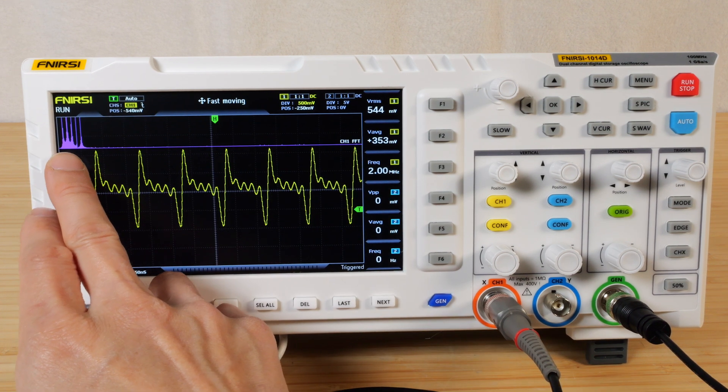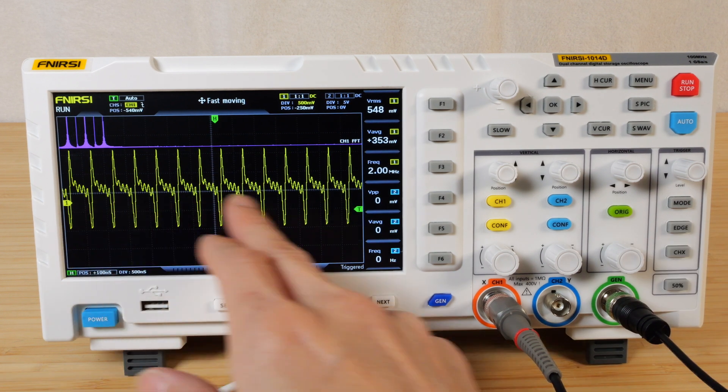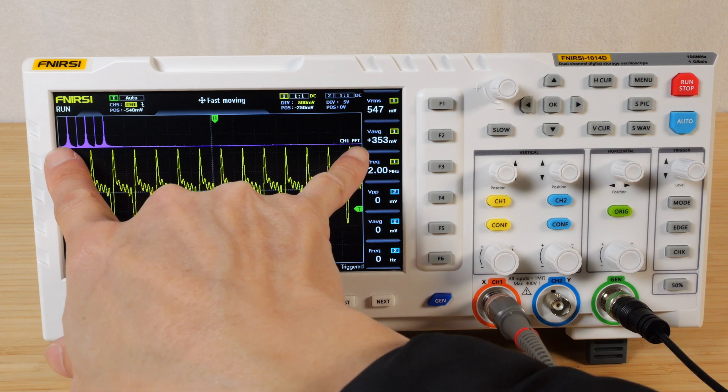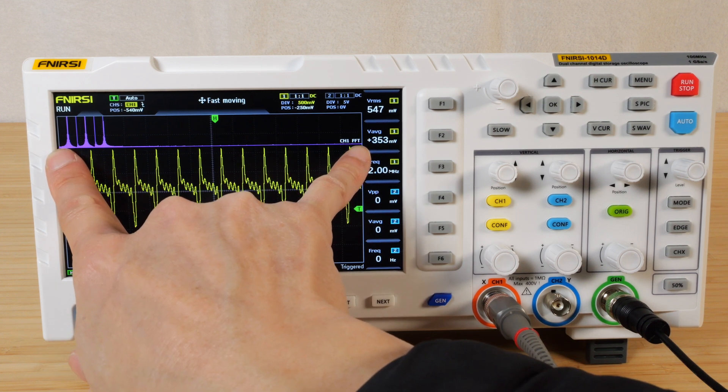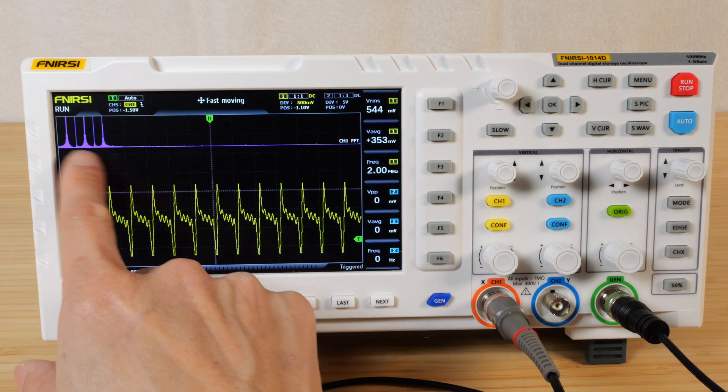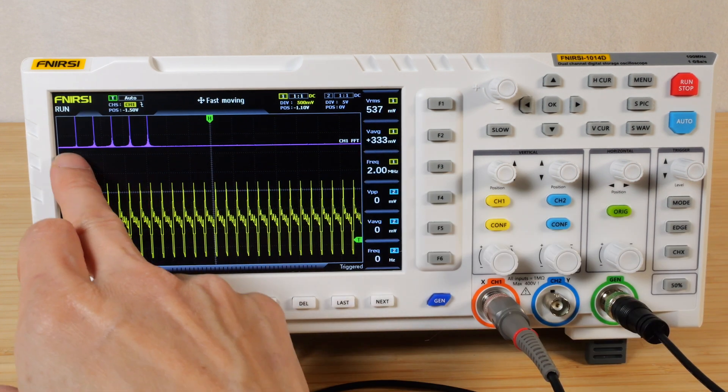The FFT up here shows a bunch of peaks, right? But when I zoom out, we have more cycles shown on the screen. But because we zoomed out, the frequency range of the FFT actually reduces. So if we keep on zooming out, we can see a higher and higher resolution of FFT. Look right here. It only shows five peaks.